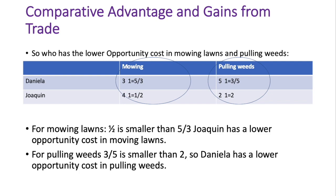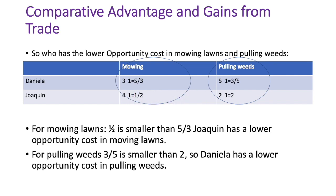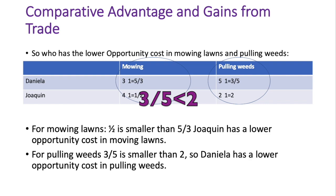To find comparative advantage, look at who has the lower opportunity cost for each good. For mowing lawns, one-half is smaller than five-thirds, so Joaquin has the lower opportunity cost and the comparative advantage in mowing lawns. For pulling weeds, Daniela's opportunity cost is three-fifths while Joaquin's is two, so Daniela has the lower opportunity cost and the comparative advantage in pulling weeds.